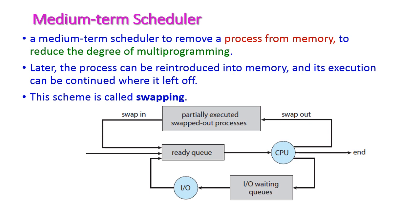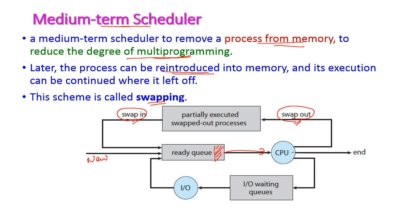The next one is the medium-term scheduler. Modern operating systems use this medium-term scheduler. In this scheduler, it will remove a process from main memory to reduce the degree of multiprogramming. After some time, the process will be reintroduced to memory and execution will continue. The process being removed from memory is called swap out, and the process being loaded back into memory is called swap in. So when a new process is created it waits in the ready queue, gets scheduled to the CPU, and if it is only partially executed it will be swapped out from memory. After some time it will again be loaded into memory, come back to the ready queue, and continue for further execution.